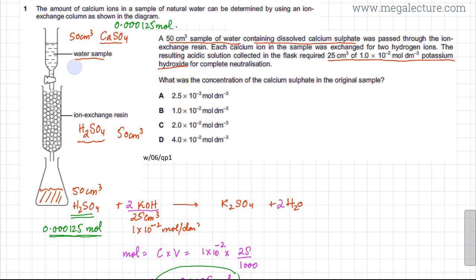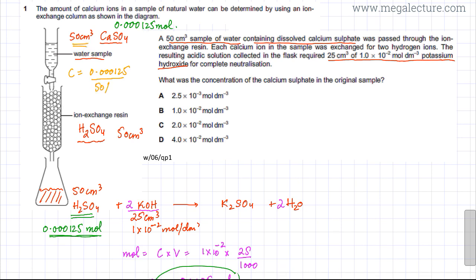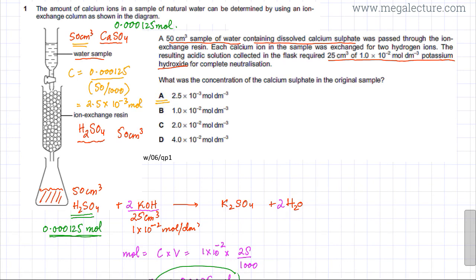The final step is to find the concentration of calcium sulphate using concentration = moles ÷ volume: 0.00125 ÷ (50/1000) = 2.5×10⁻³ mol/dm³. This gives option A as the correct answer.